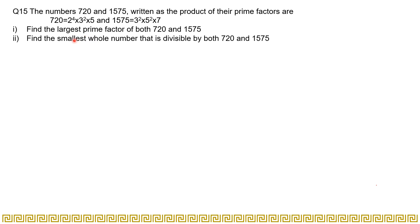When we talk about the largest prime factor, we can relate it to the highest common factor — so for part one, you have to find the HCF of both 720 and 1575. For part two, finding the smallest whole number divisible by both 720 and 1575 means you need the LCM. So in the first part find the HCF, and in the second part find the LCM.